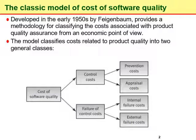As we can see in this figure, the cost of software quality is classified as control costs and failure of control costs. Each of these two classes is further classified: control costs include prevention costs and appraisal costs, while failure of control costs include internal failure costs and external failure costs.